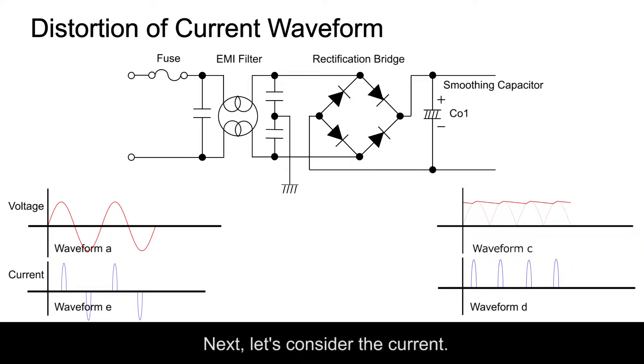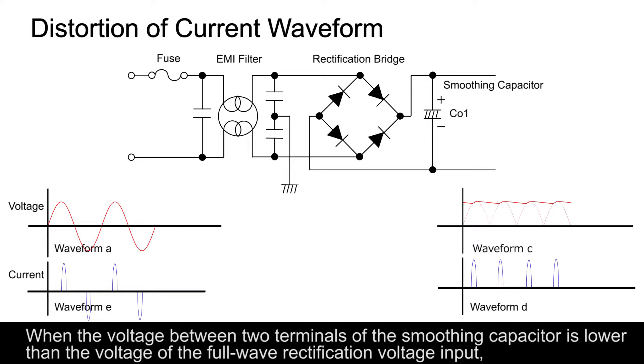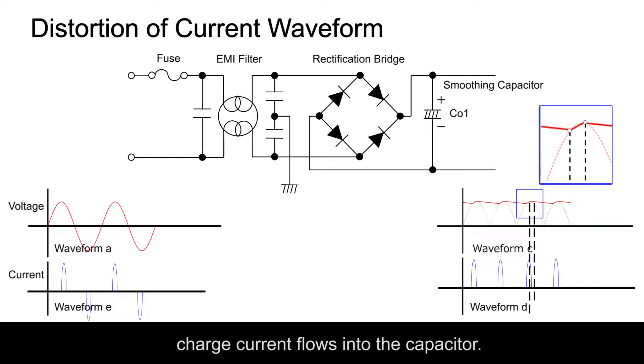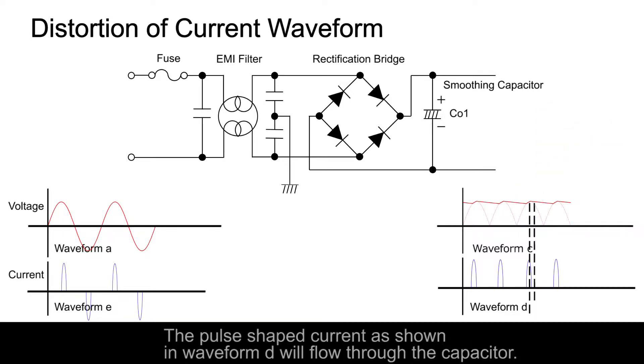Next, let's consider the current. When the voltage between two terminals of the smoothing capacitor is lower than the voltage of the full wave rectification voltage input, charge current flows into the capacitor. The pulse shaped current as shown in waveform D will flow through the capacitor.